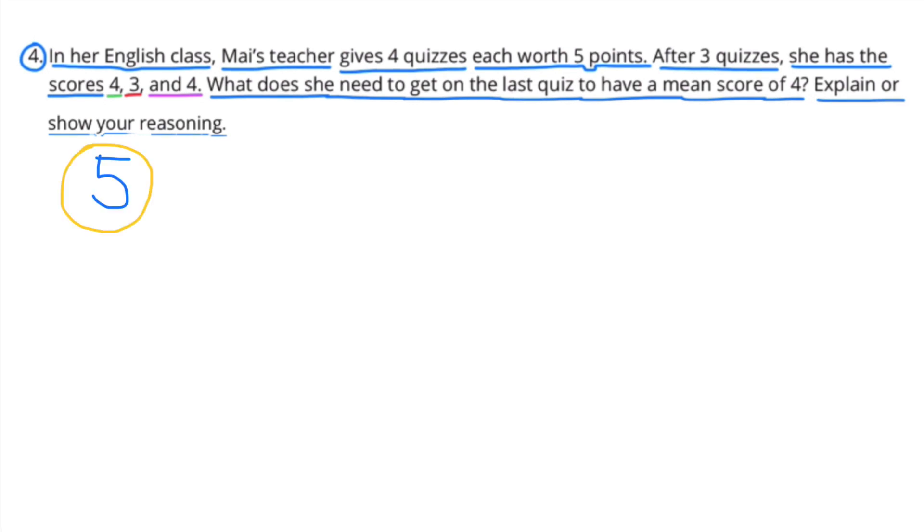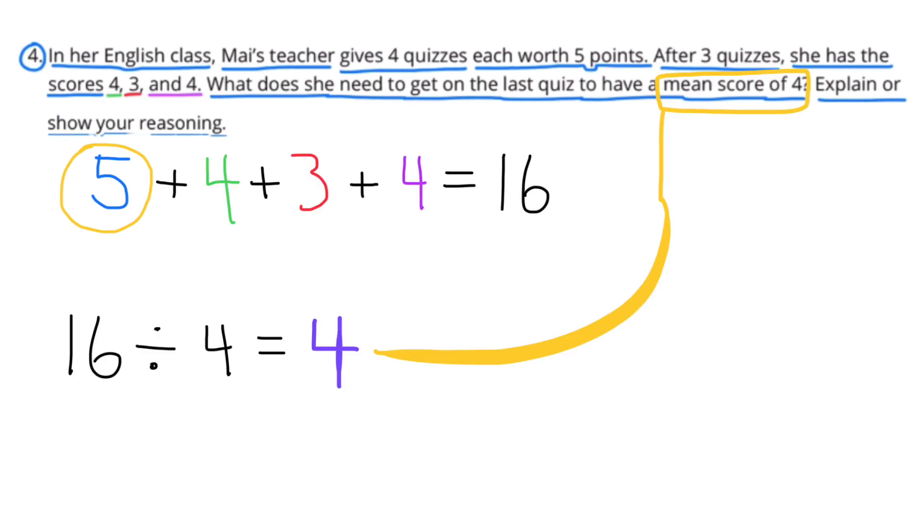On her last quiz, she needs to score a 5 in order to have a mean score of 4. Because a score of 5 plus 4 plus 3 plus 4 equals 16. And 16 total points divided by 4 quizzes equals 4, or a mean of 4. So once again, Mai would have to score 5 points on her final quiz in order to have a mean of 4.